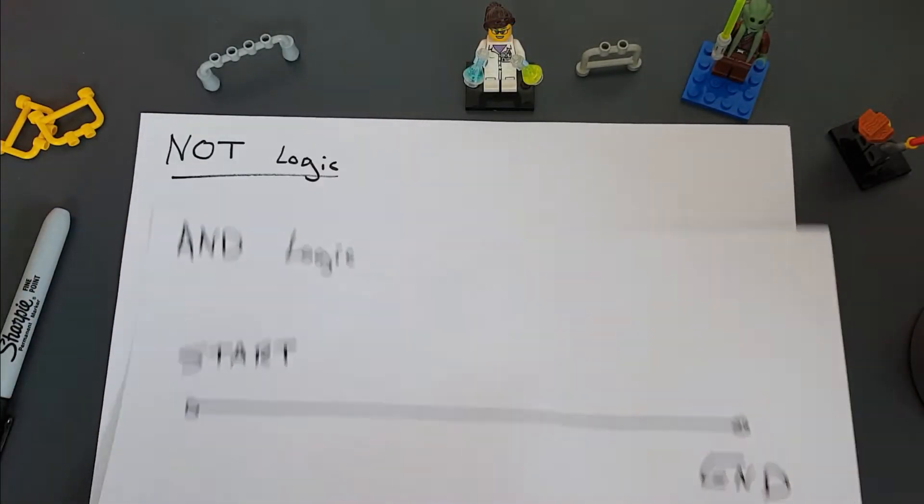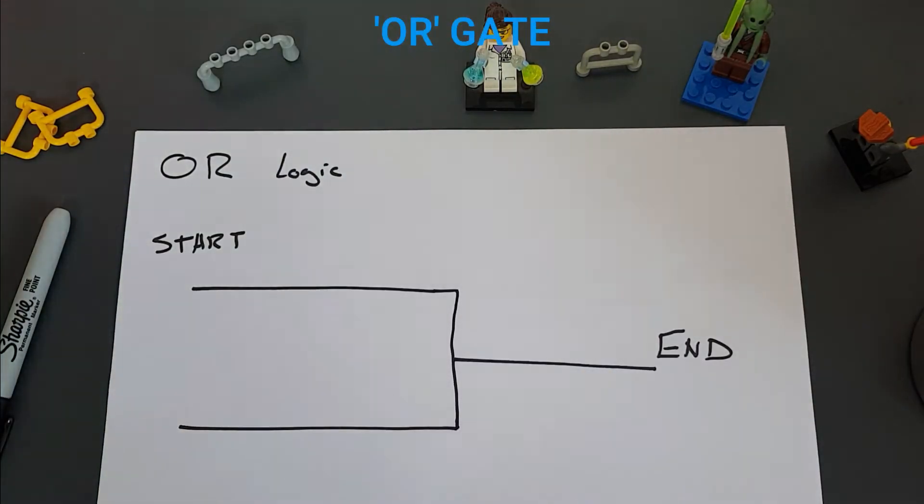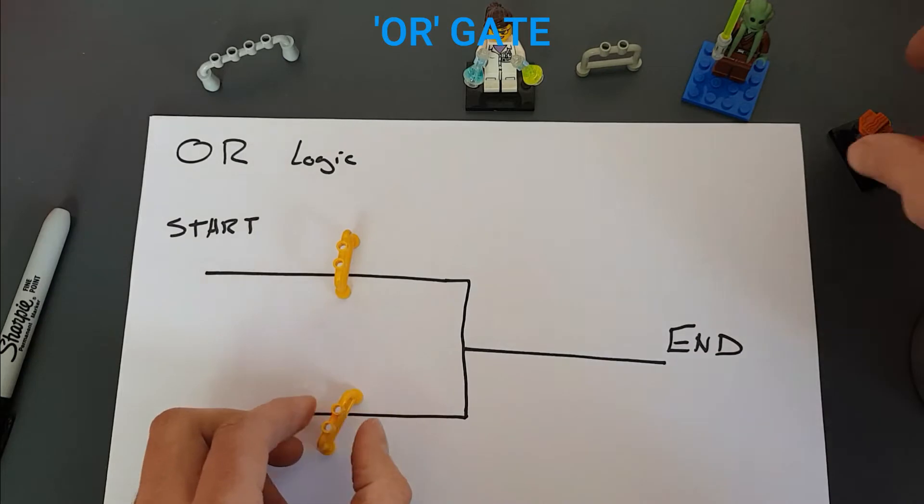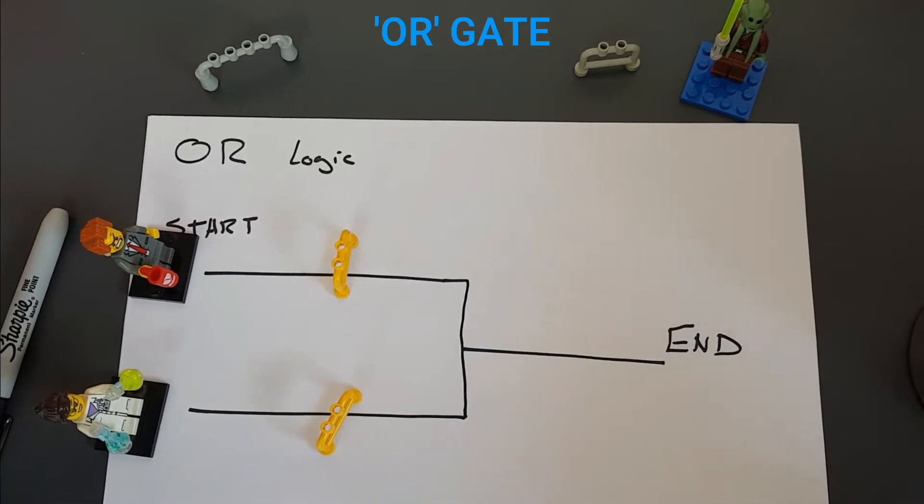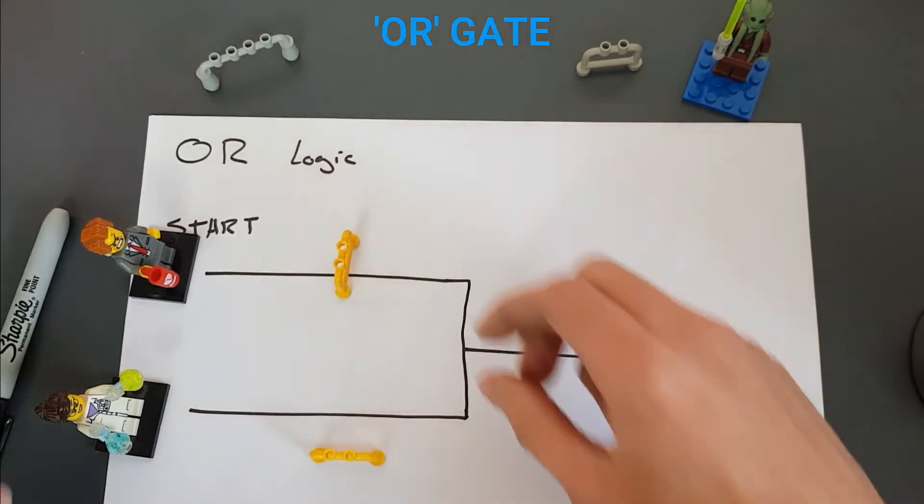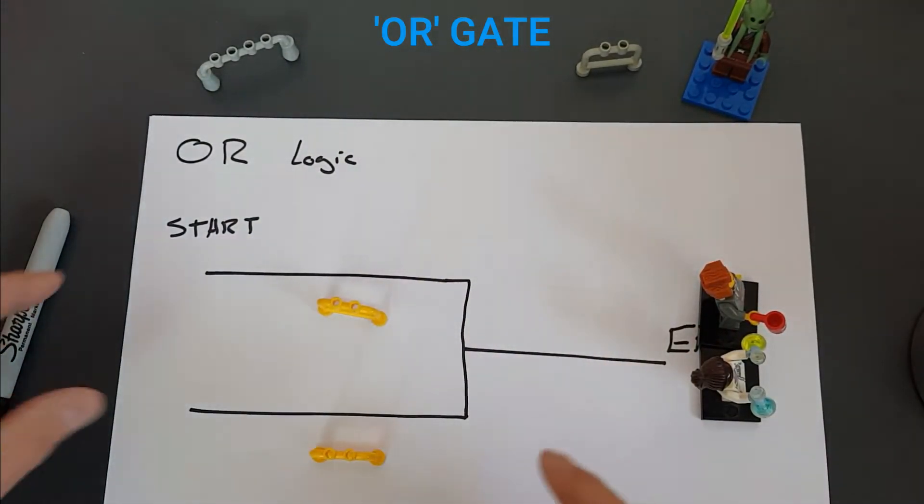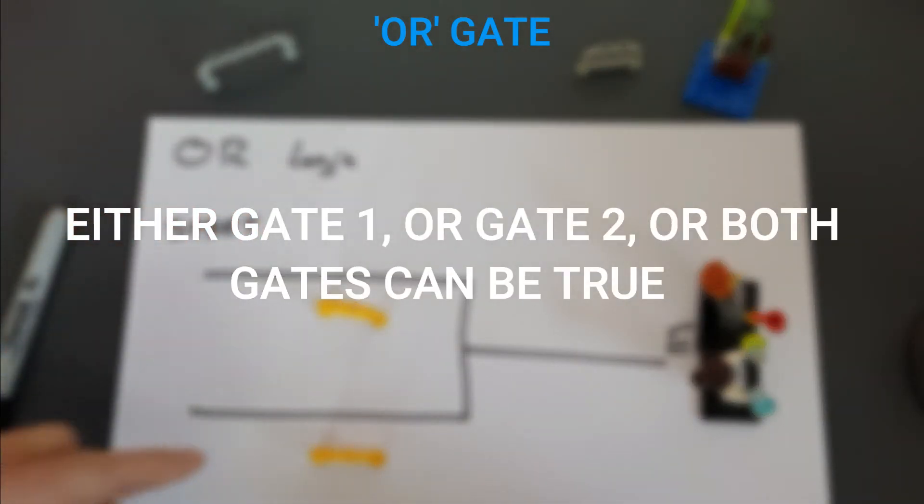The next one is OR, and OR is also simple. Oops, that's not OR, that's NOT. The next one, OR, is simple. OR, we've got two different gates again. And President Business could go down the one side, or Lucy could go down the other side. And either one of these could be open to get from start to end, or both. We can both get from start to end from this. So OR is two gates, but you can get through from start to end if either one of those gates are open, or if both are open.